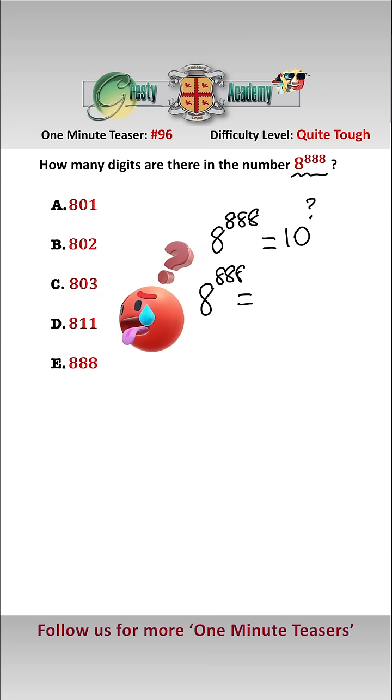8 to the power of 888 equals 10 to the power of 888 log to the base 10 of 8. If we stick 888 log to the base 10 of 8 into any standard calculator, we get that it equals 801.94.